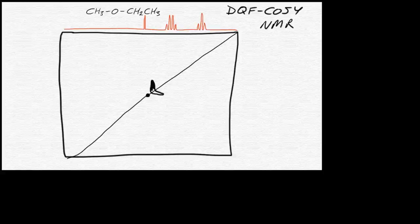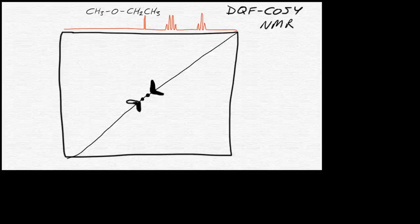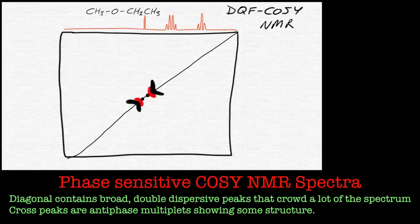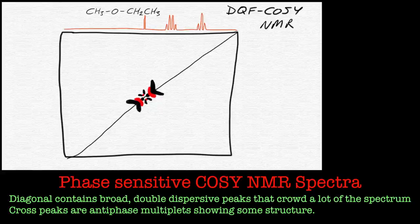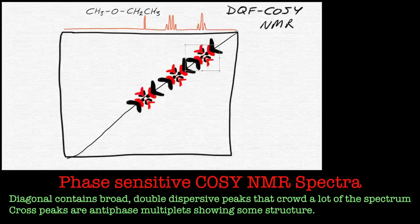Hi and welcome to this DQF or Double Quantum Filtered COSY NMR spectroscopy tutorial. When we look at phase-sensitive COSY NMR spectra, we see that the diagonal peaks have this really large or broad in-phase double dispersion line shapes which can hinder any cross peaks that are close to the diagonal.